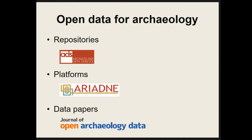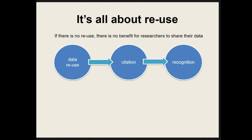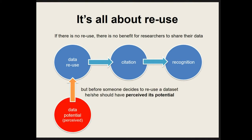As researchers, why would you provide open data access? It's a matter of recognition. It all begins with reuse: if there is no data reuse there will be no citation of your data and no recognition. That's what data papers are about — the Journal of Open Archaeology Data provides statistics on downloads and citations so you get recognition. But the core point of this presentation is: if there is no perception of the potential of your data, there will be no data reuse.